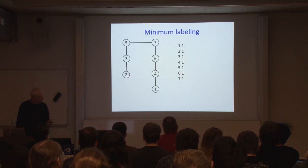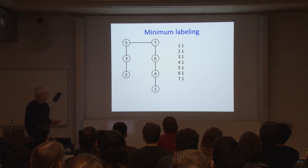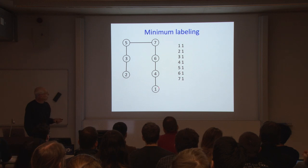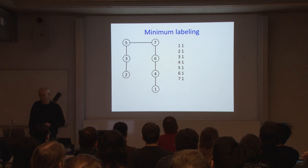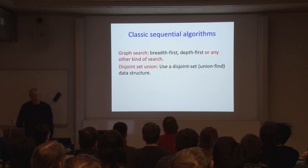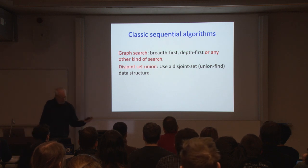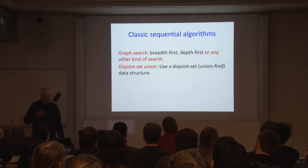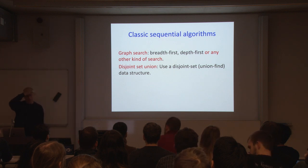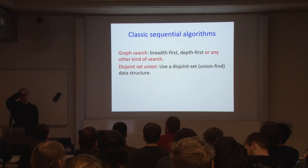Here is a connected graph — it's one big component. The minimum labeling assigns every vertex the label one, since that's the smallest vertex in the component. This problem is easy to solve sequentially, with a single-processor algorithm, and there are two rather different ways to do it. One is to use graph search — breadth-first search, depth-first search, or any kind of graph search.